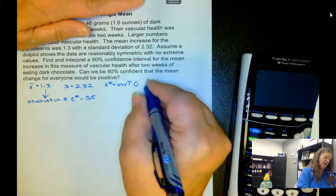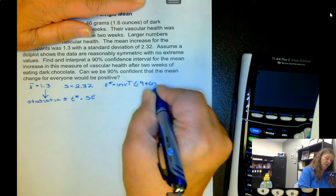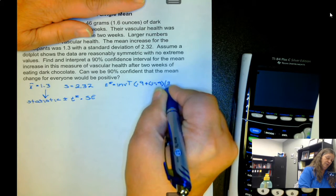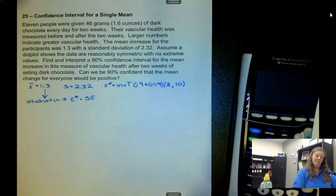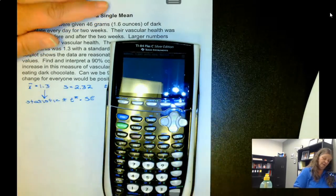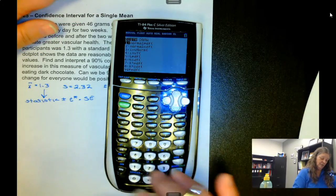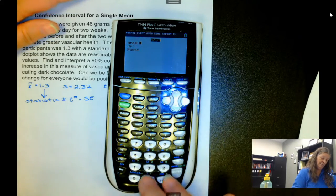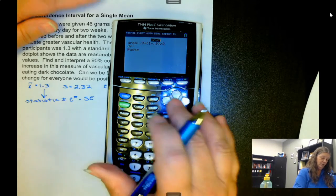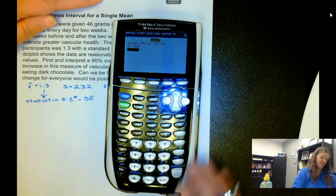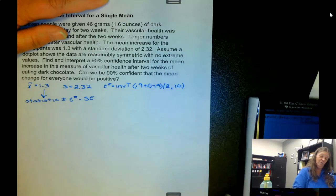So we have 0.9 plus 1 minus 0.9 over 2, and then n is 9, n is 11, so degrees of freedom is 10. So we have 2nd vars inf t, 0.9 plus 1 minus 0.9 divided by 2 for our area, 10 degrees of freedom, and we get a t-splat of 1.812.